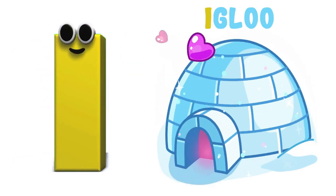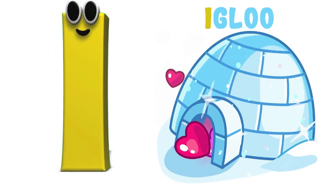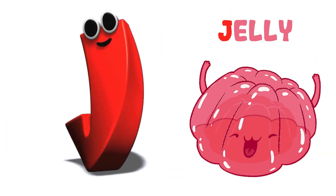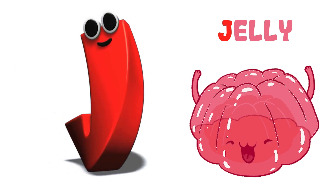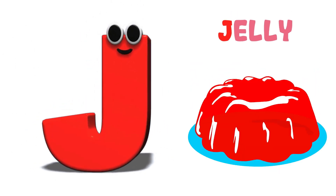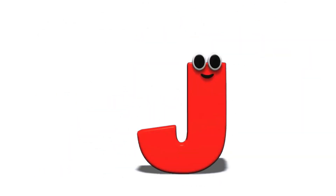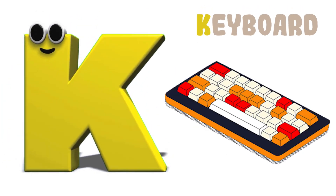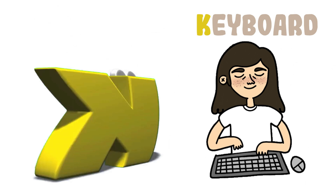I is for Igloo, I-I-Igloo. J is for Jelly, J-J-Jelly, J-Jelly. K is for Keyboard, K-K-Keyboard, K-Keyboard.